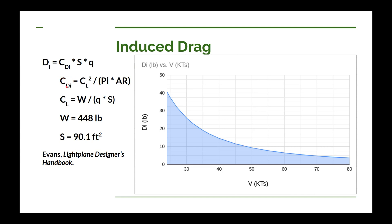The coefficient of induced drag is also pretty easy to estimate. Take the coefficient of lift of the wing, squared, divided by the product of pi (3.14) times the aspect ratio of the wing. We can also calculate the coefficient of lift, which is the weight of your airplane divided by the product of Q times the surface area of your wing.